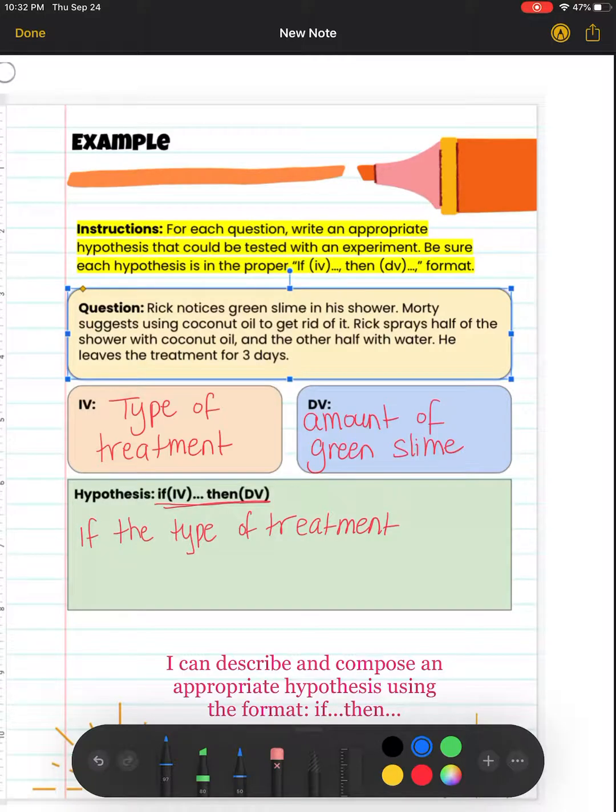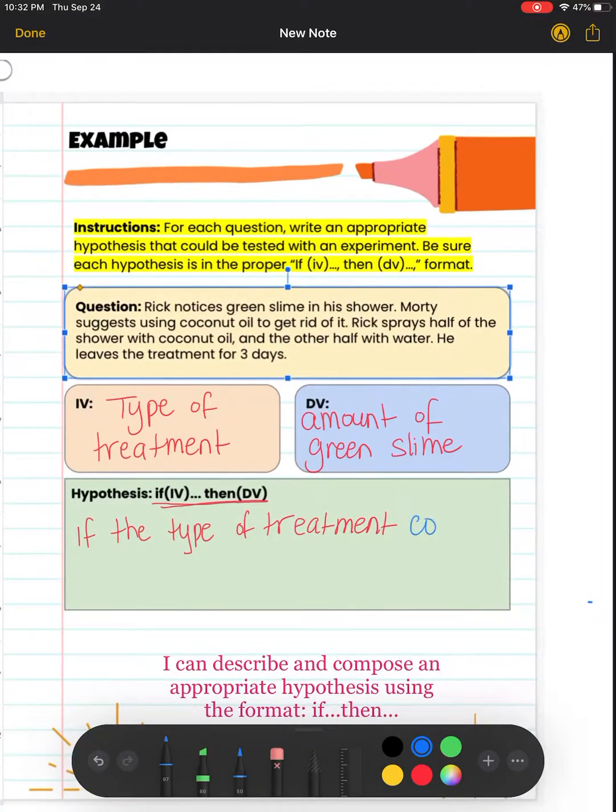Now I'm going to choose coconut oil. This should have said is. So if the type of treatment is coconut oil, or if the type of treatment used is coconut oil, then the amount of green slime...